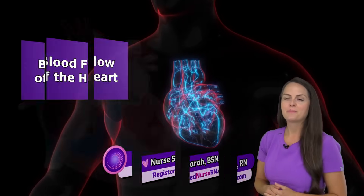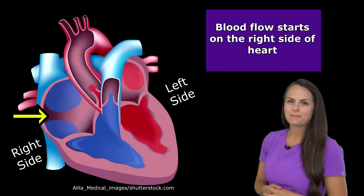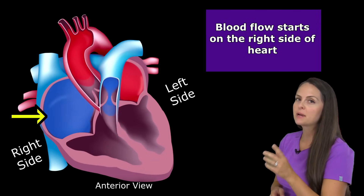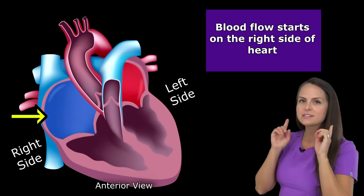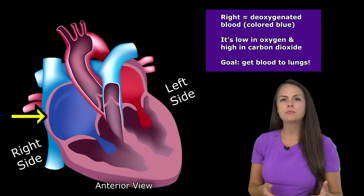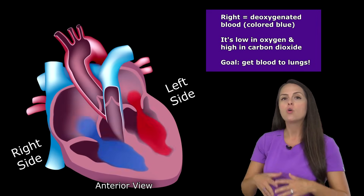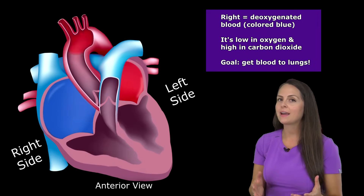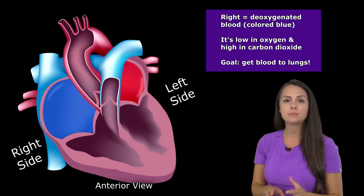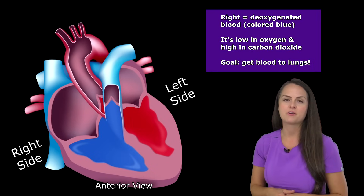Let's go through the blood flow of the heart. Blood flow always starts on the right side of the heart. On your screen it looks like I'm talking about the left, but it's flipped — I'm really talking about the right side, so keep that in mind. On the right side, your heart is dealing with deoxygenated blood. This means your blood is really low in oxygen but high in carbon dioxide, and the whole goal of the right side is to get this deoxygenated blood to the lungs so we can give it some oxygen and remove that carbon dioxide.